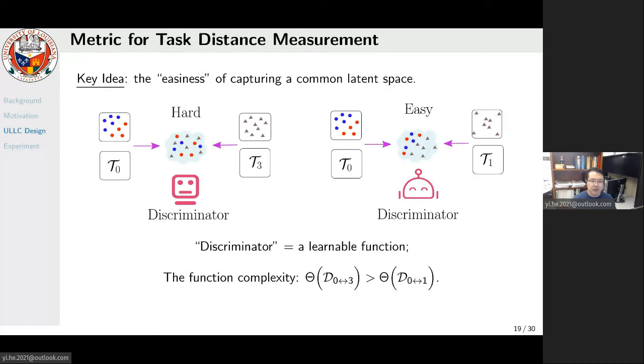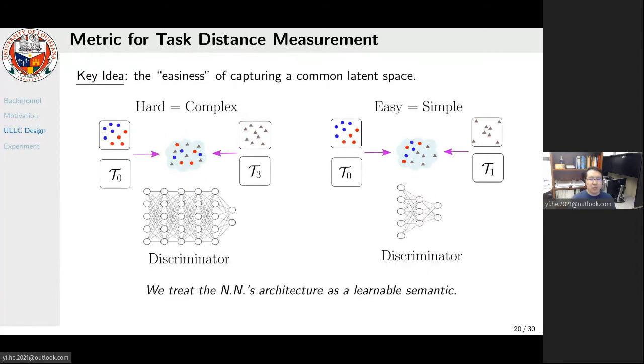In contrast, between two disparate tasks, the discriminator will be very difficult to learn because we cannot find a space that makes the two tasks' data indistinguishable. In our work, to make discriminator complexity easily measurable, we use neural nets to build the discriminator. We treat the neural net's architecture as a learnable semantic. If a neural net is learned to be complex and deep, then discovering a latent space to make the two tasks indistinguishable is difficult, which means the two tasks are disparate. On the contrary, if the neural net is simple and shallow, then two tasks must be quite similar so that their features can be easily aligned in a latent space.